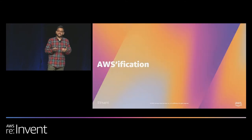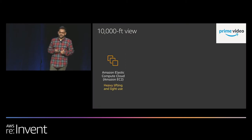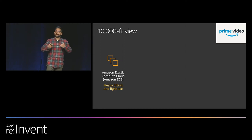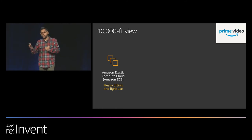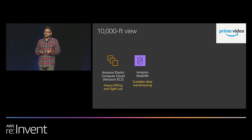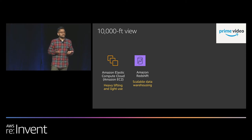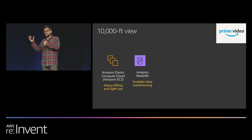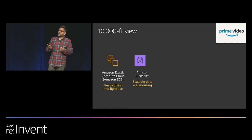Looking at the AWSification of things, from a 10,000-foot view of all services Prime Video uses: we have traditional EC2 fleets doing heavy lifting on day-to-day operations — not just analytics, but also custom DRM work and longer-running transactions. We also had Amazon Redshift — when you gather petabytes of data, you need a data warehousing platform that scales. When you have hundreds of millions of rows and want to do joins, you need auto-scaling, and Redshift provided that scalable data warehousing solution.